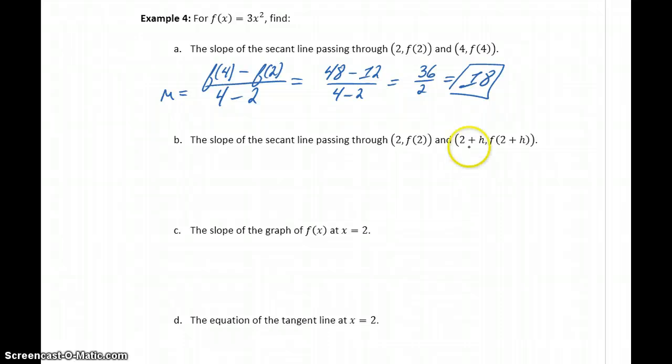So now instead of being given a specific second point, we want to find the slope of the secant line passing through (2, f(2)) and (2 + h, f(2 + h)). So meaning our second point is a distance of h away from 2, some arbitrary distance away.